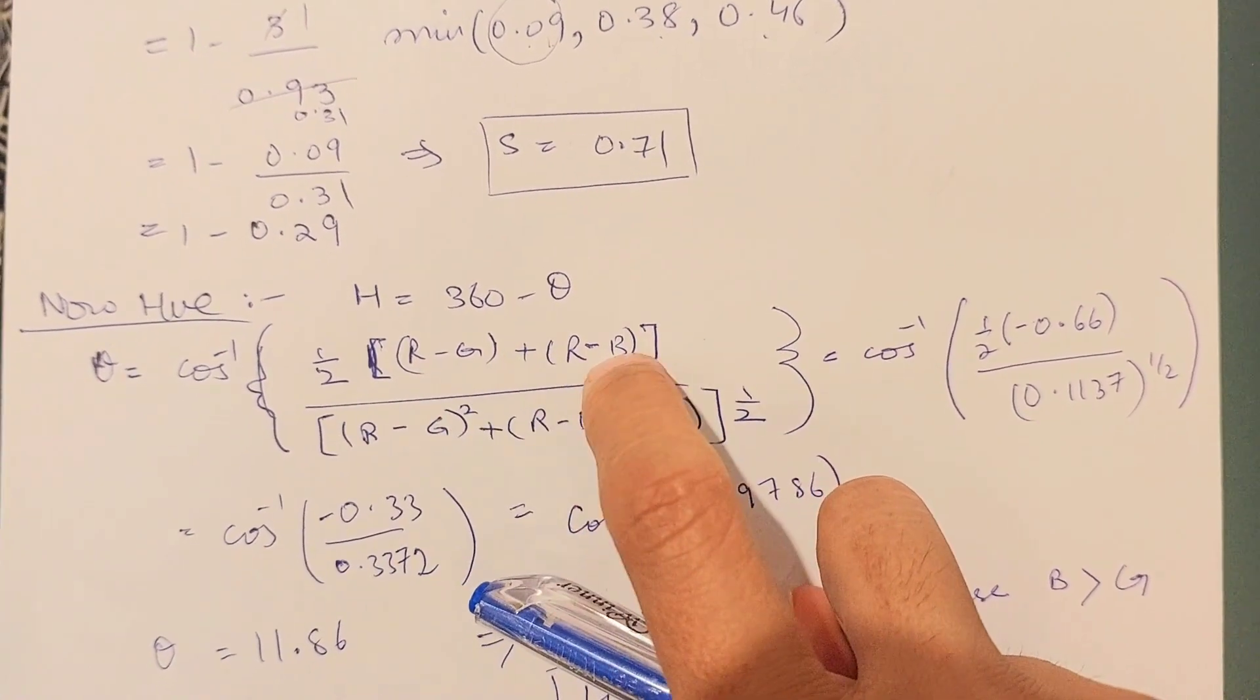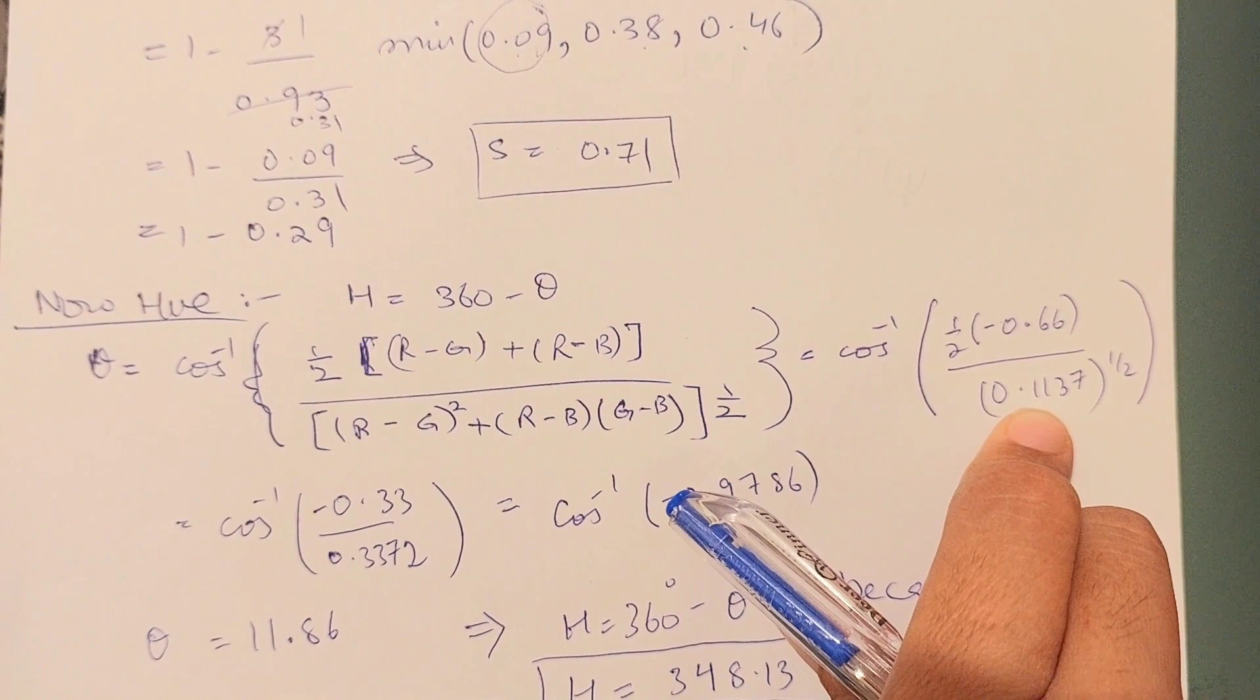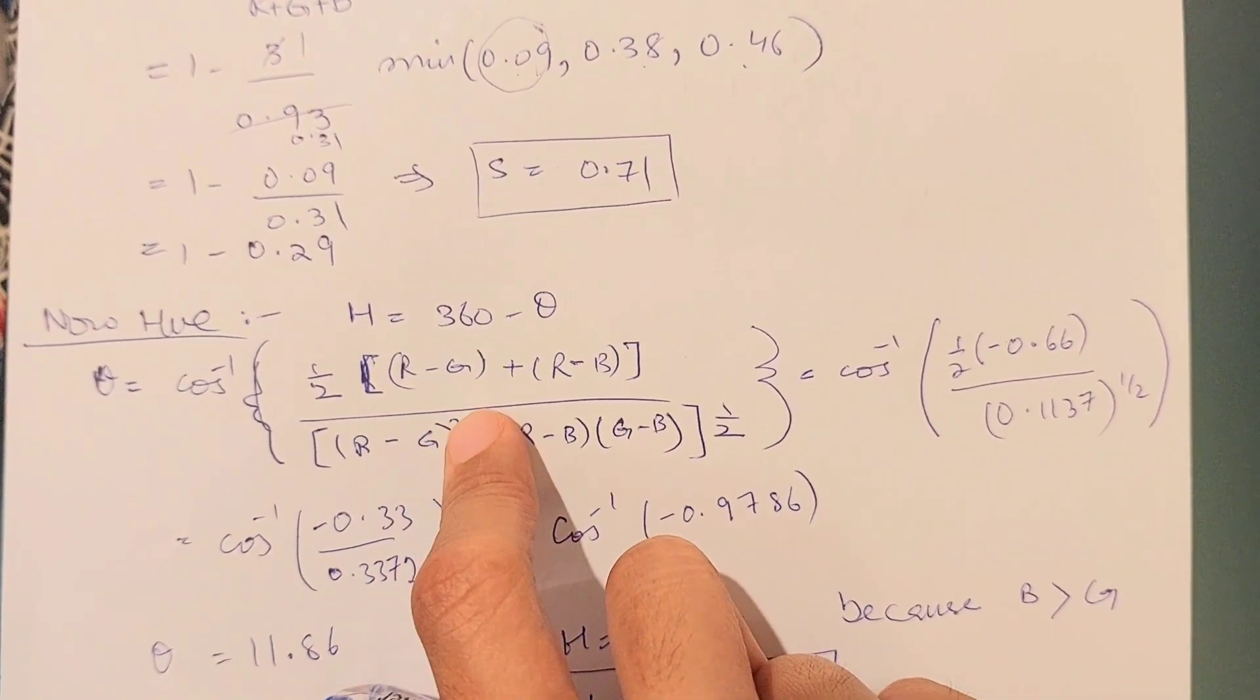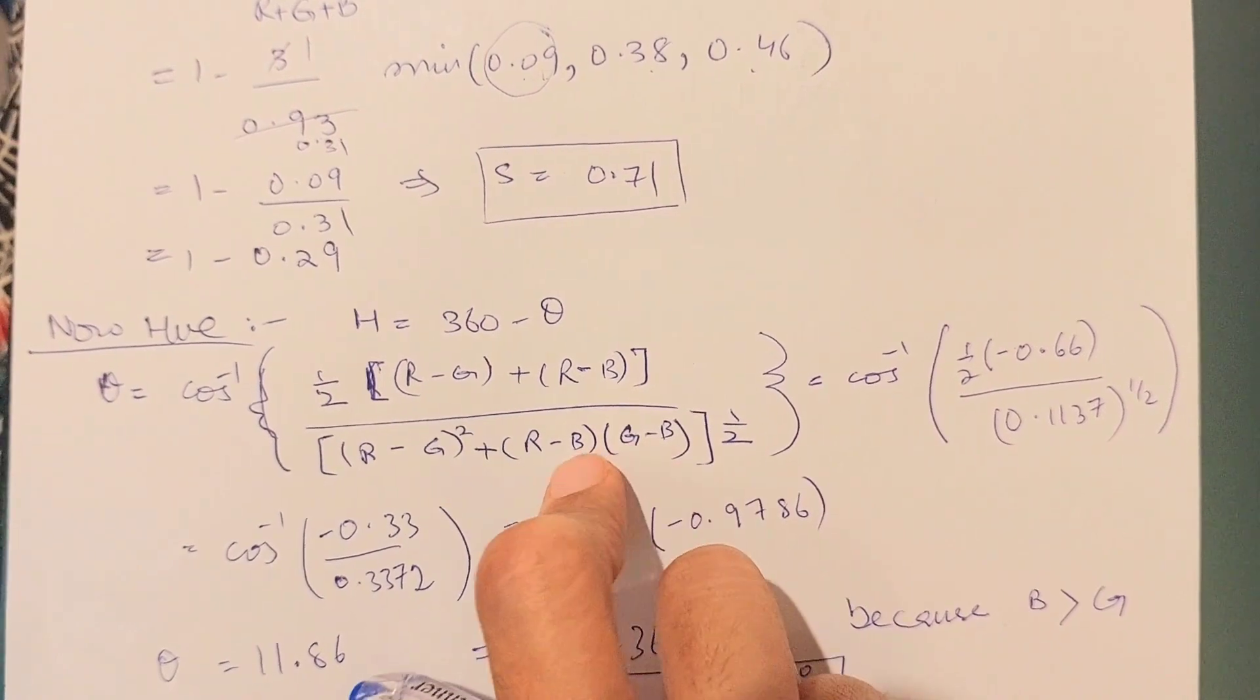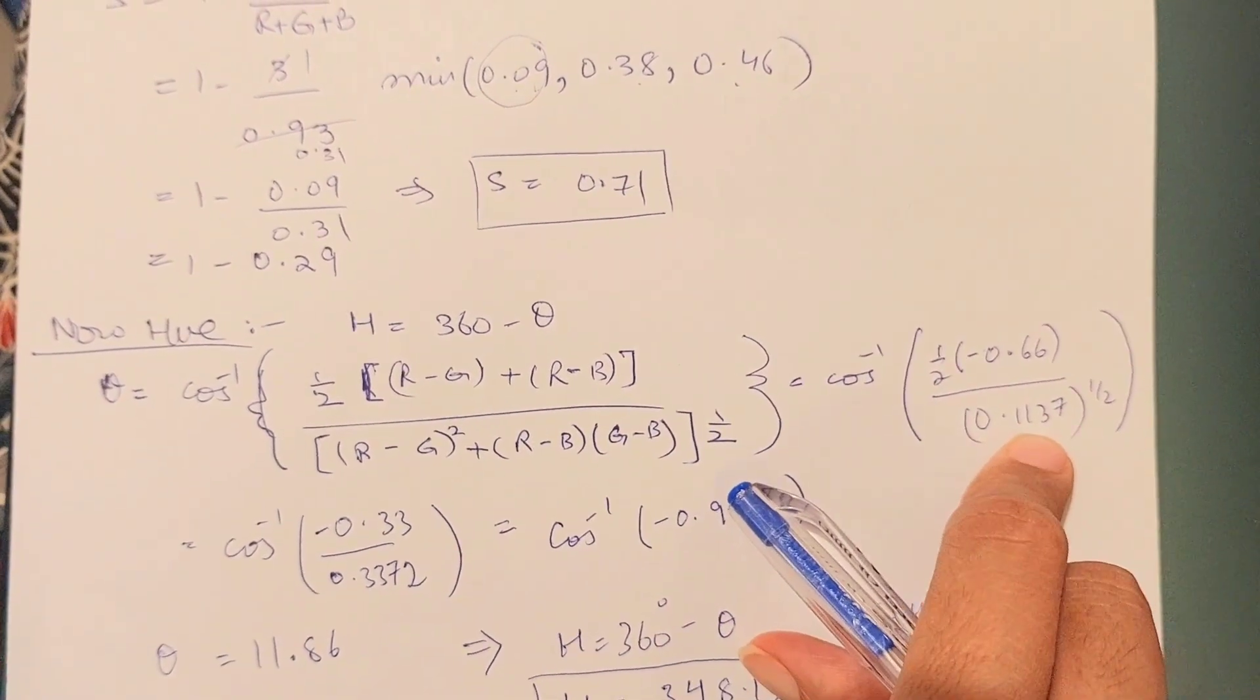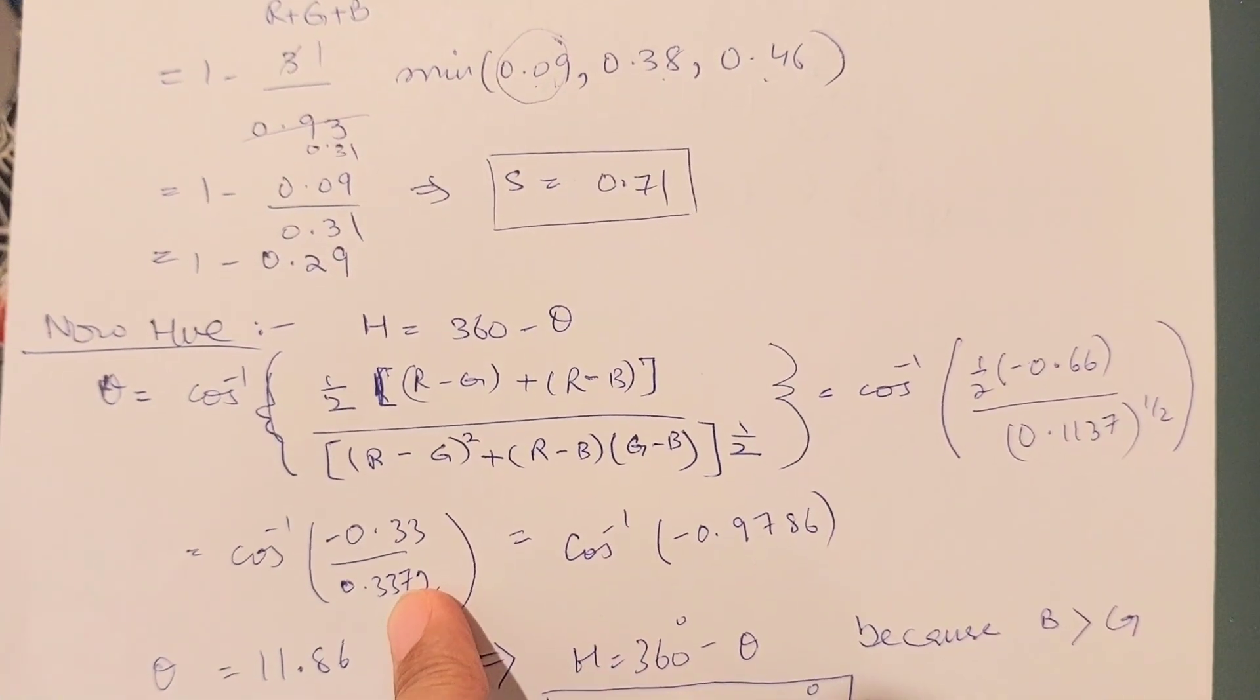I'm going to place the values. I'm going to simply put cos inverse here, and this half, and this 0.66 has actually came by doing this subtraction, this subtraction, and summing this up. Similarly, in the denominator, this 0.1137 came by doing this subtraction, squaring these two subtractions, multiplying, and then addition.